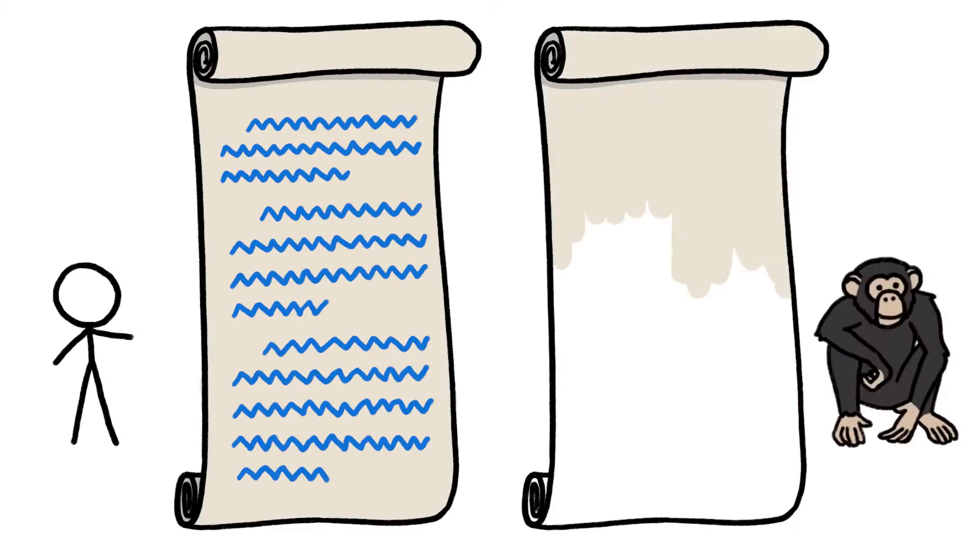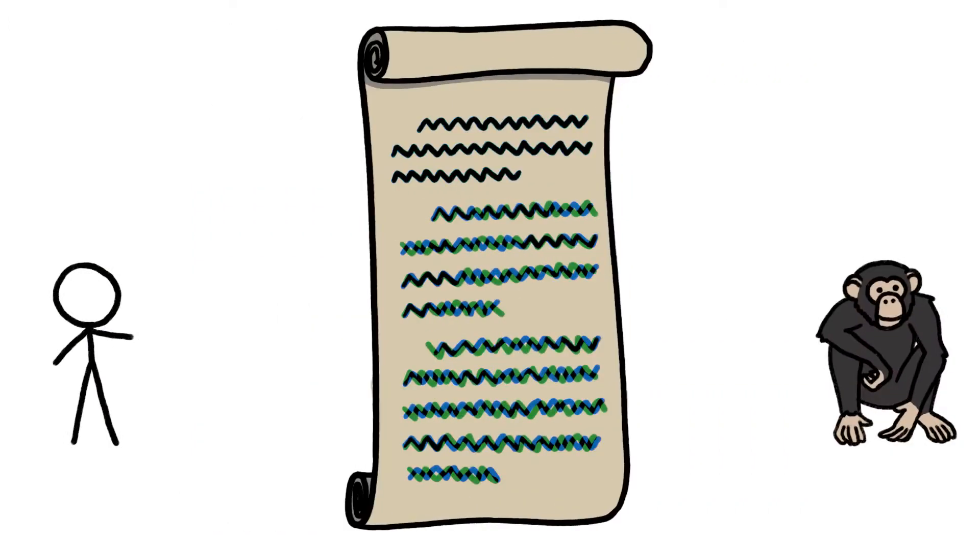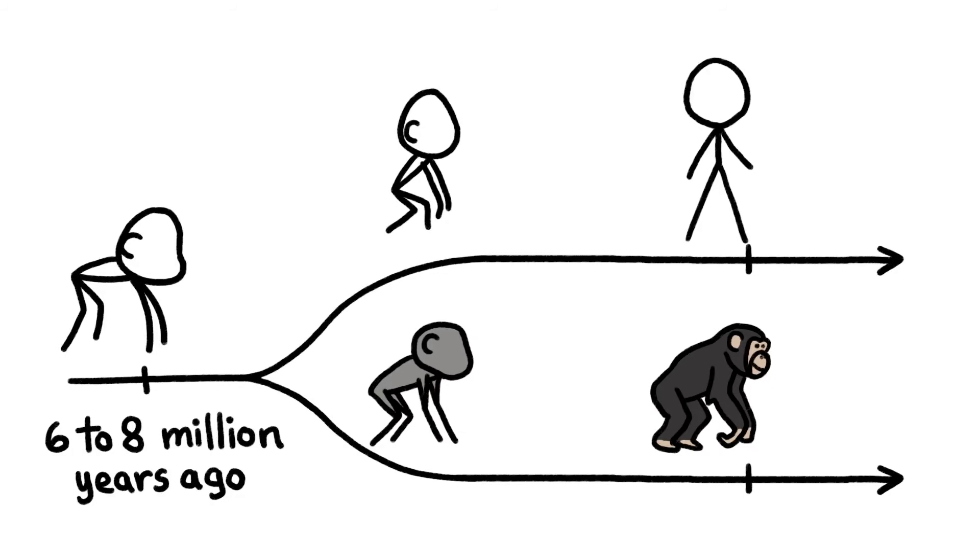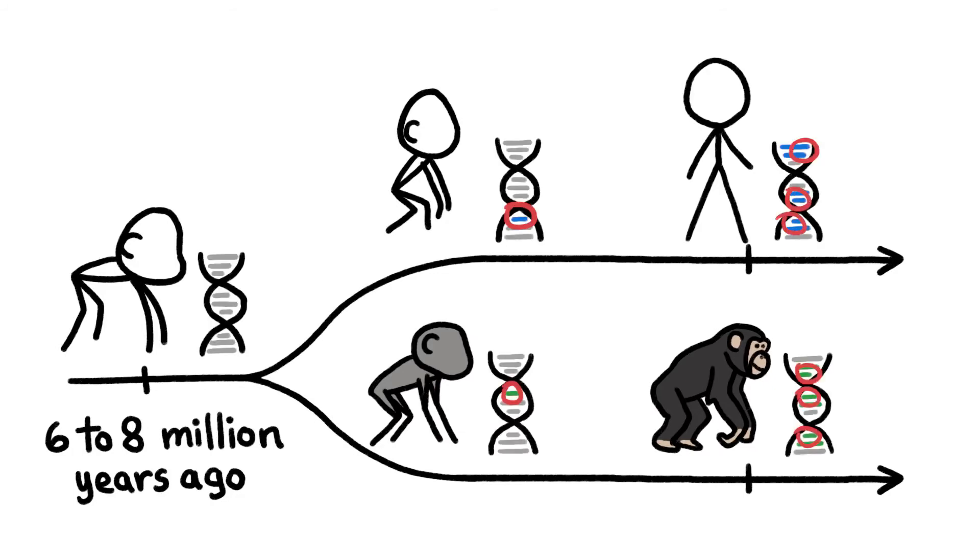But in reality, the human and chimp scrolls don't sync up so easily. In the six to eight million years since we split from our last common ancestor, chance mutations and natural selection have changed each of our genomes in radical and unique ways.